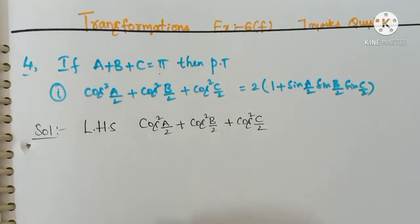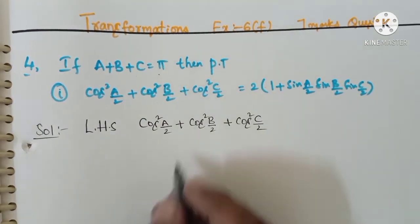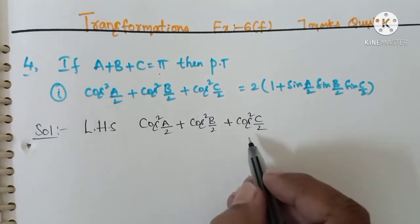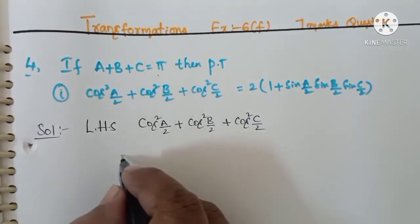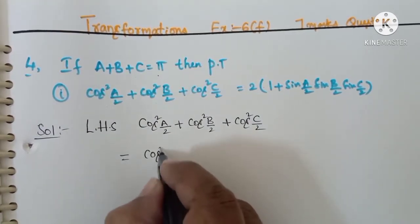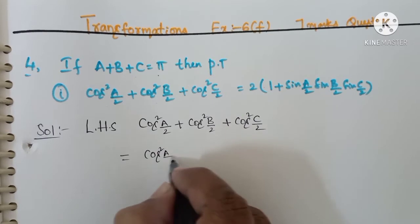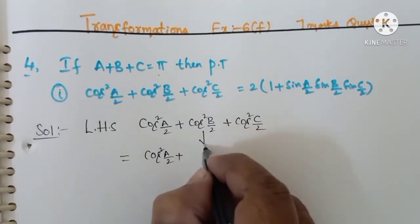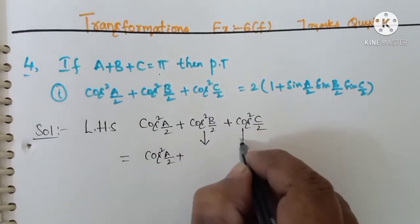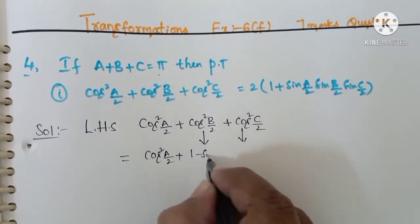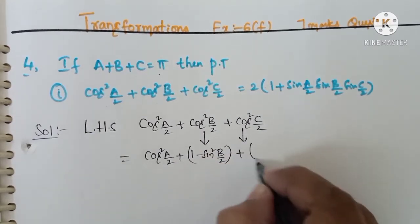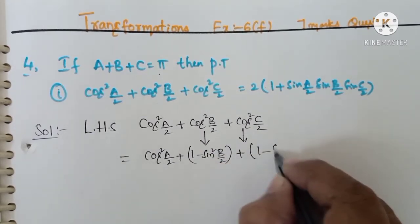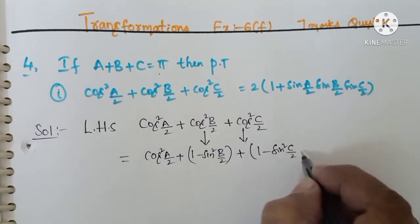First we take the LHS: cos squared a by 2 plus cos squared b by 2 plus cos squared c by 2. We convert cos squared a by 2 using the identity 1 minus sin squared. So we get: 1 minus sin squared b by 2, plus 1 minus sin squared c by 2.